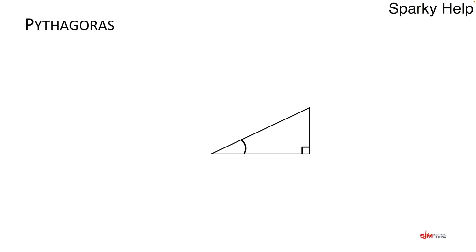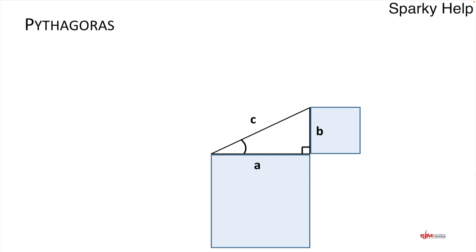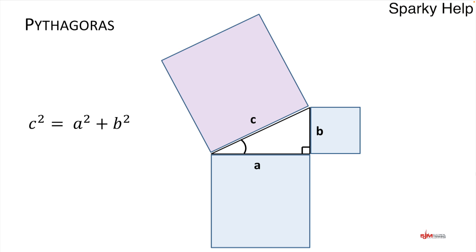Pythagoras — hopefully most people remember this one. If we call the sides A, B and C, on a right-angled triangle the square of one side plus the square of another side always equals the square of the hypotenuse. As a formula: C squared equals A squared plus B squared. But since we want the length, not the square, we square root both sides: C equals the square root of A squared plus B squared.